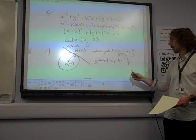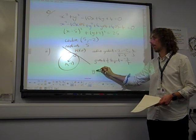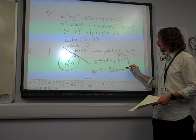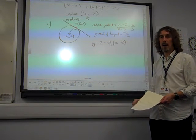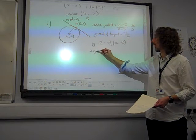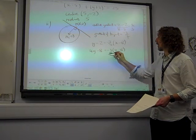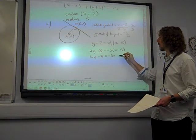So we want a line with gradient minus 3 quarters going through the point (8,2). Y minus y1 is m times x minus x1. We know where we're heading with this. Multiply through. 4y minus 8 is minus 3 times x minus 8. So 4y minus 8 is minus 3x plus 24.